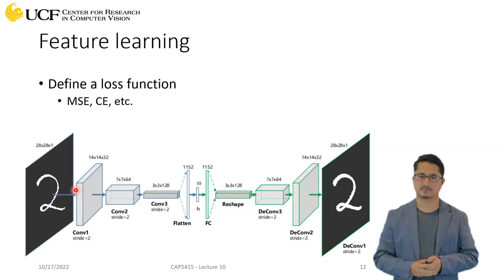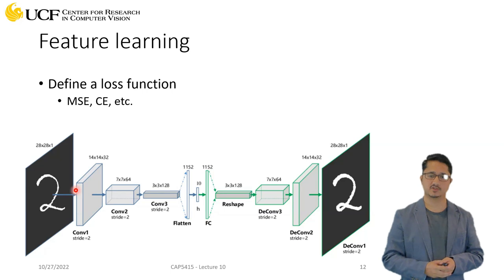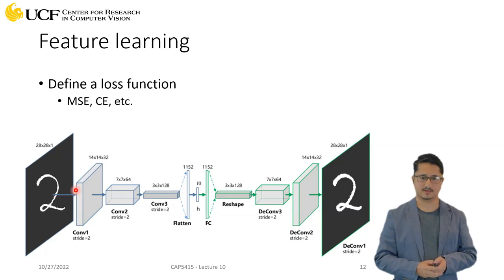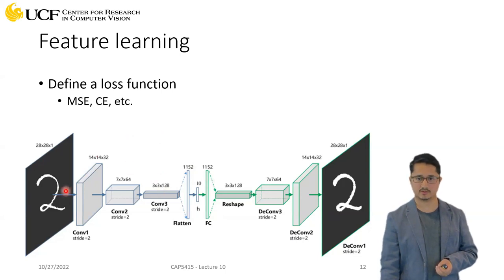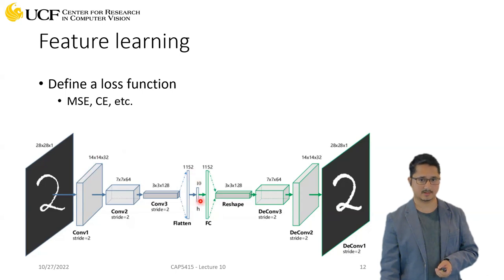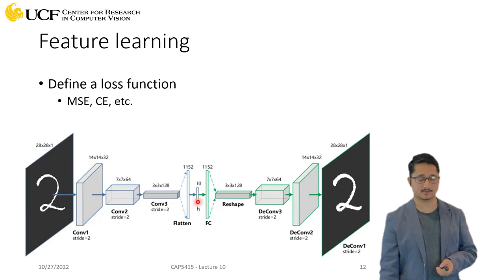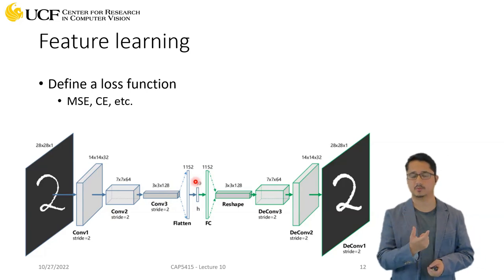So why are autoencoders useful? You can use them to perform feature learning, and you don't even need labels — you can train using unlabeled data. Once you have trained your autoencoder, you simply discard the decoder because you don't care about reconstruction anymore. All you care about are the 10 latent values. Given any input image, this encoder will give you those 10 values, which you can use as features for that particular image.